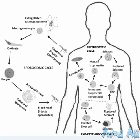Secondly, it forms a gametocyte. The gametocytes are of two types, and these gametocytes divide and form two types of gametes: one is macrogamete and the other is microgamete. Now the cycle repeats.